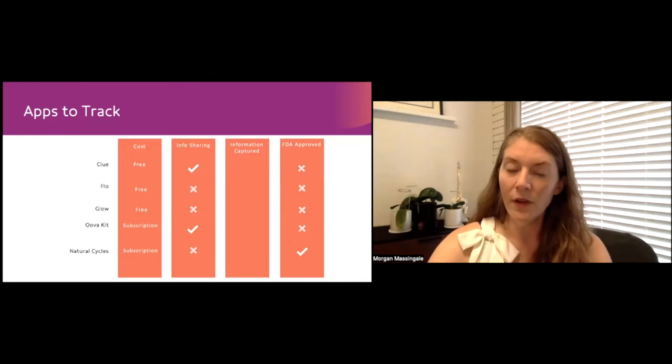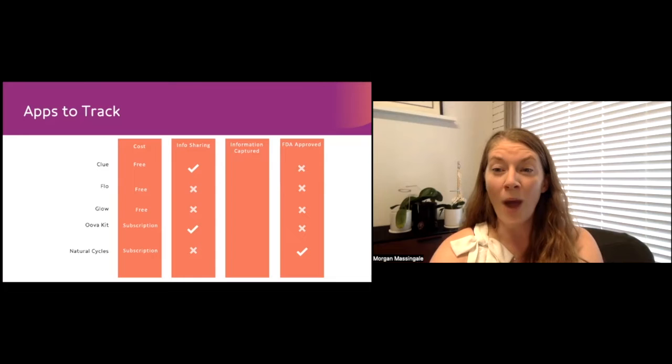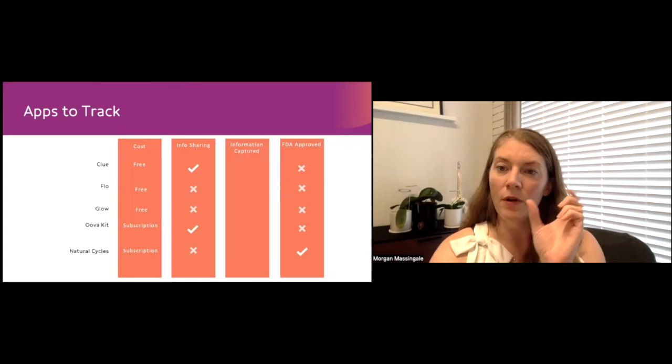Clue is actually the most widely used tracking app on the market. And so it does have a really wide data set. So it's algorithm is actually pretty good at predicting ovulation and telling you your fertile window days.